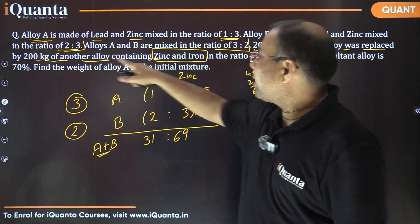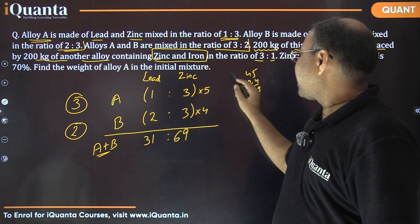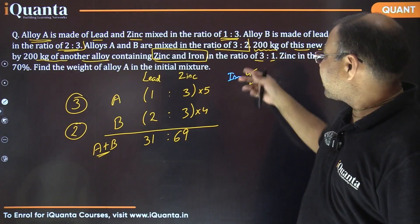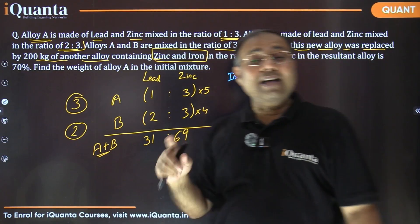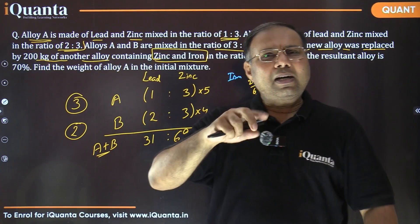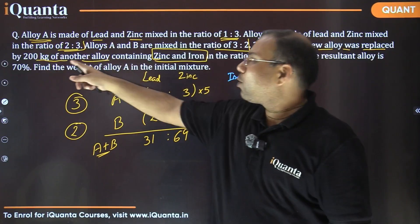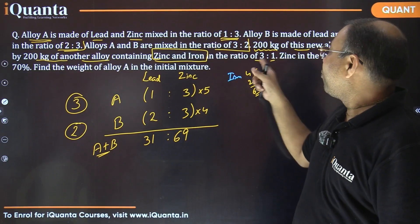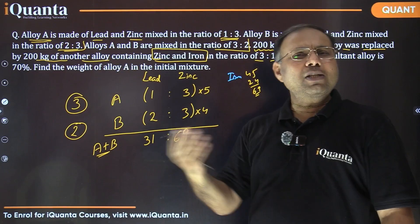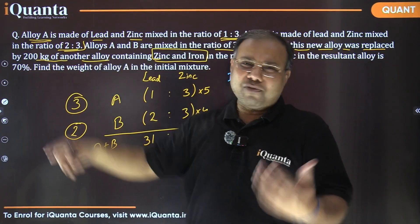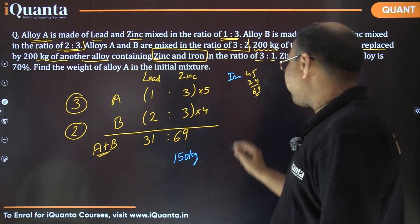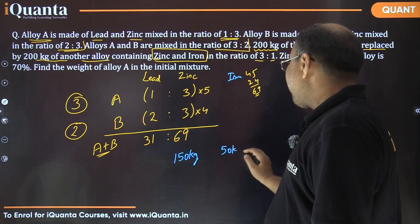This new alloy contains zinc and iron in the ratio 3:1. Total quantity is 200 kg. Out of four parts, three parts is zinc and one part is iron. So iron is one-fourth of 200, which is 50 kg, and zinc is the remaining 150 kg.